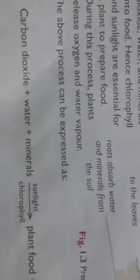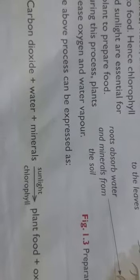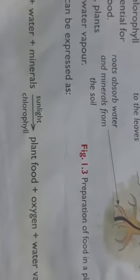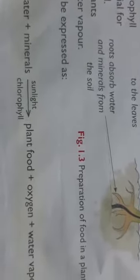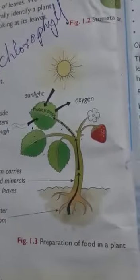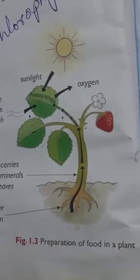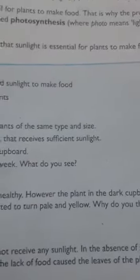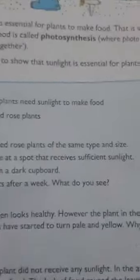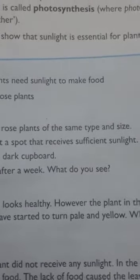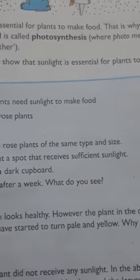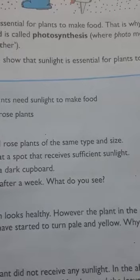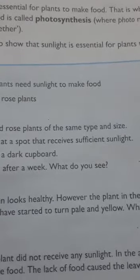This process can be shown as an equation: carbon dioxide + water + minerals, in the presence of sunlight and chlorophyll, produce food, oxygen, and water vapor. This whole process by which plants make their own food is known as photosynthesis — where 'photo' means light and 'synthesis' means making.